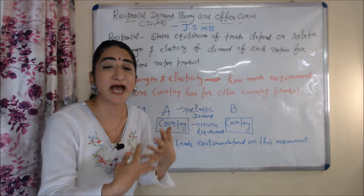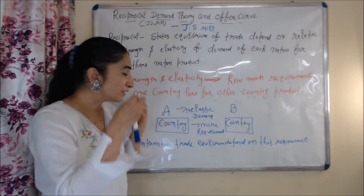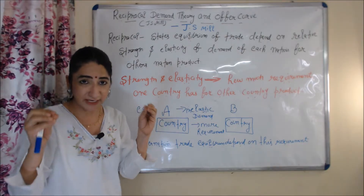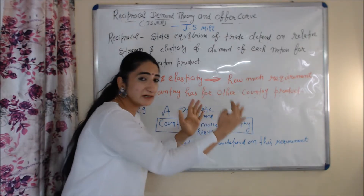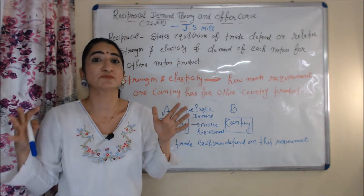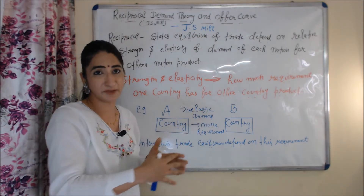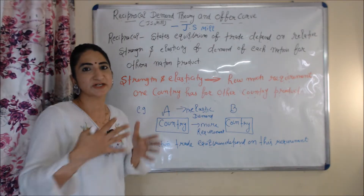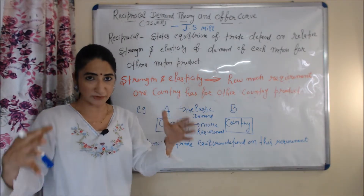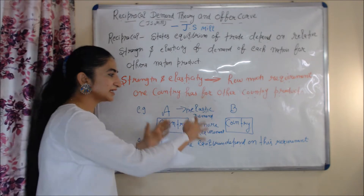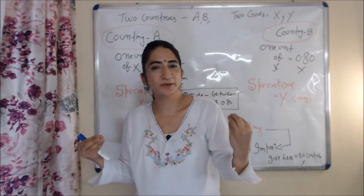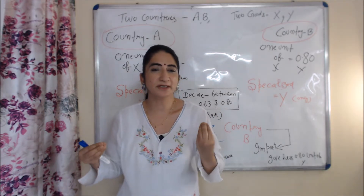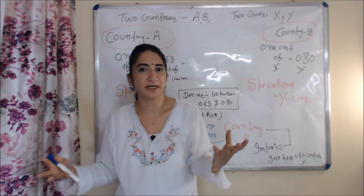For example, if country A has inelastic demand for country B's product, it means country A has more requirement of country B's product. According to this theory, this requirement will decide international trade equilibrium — international trade equilibrium depends on this requirement.